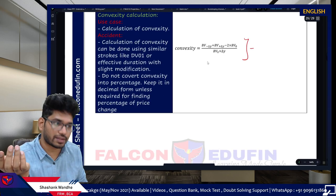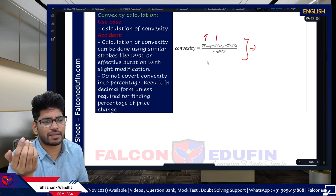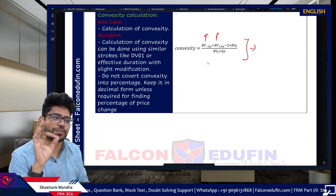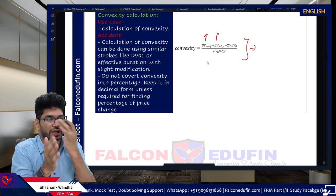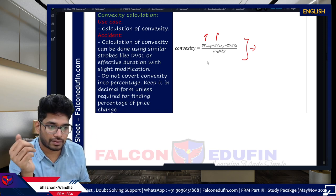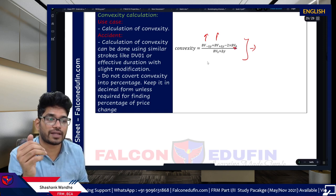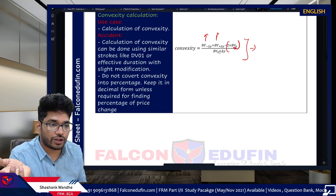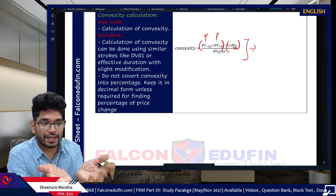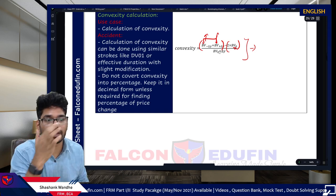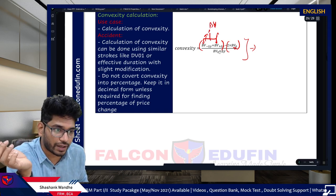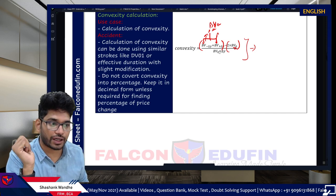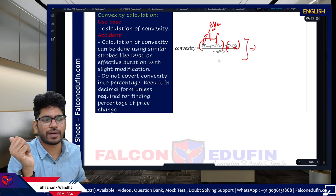Convexity is not highly testable, but if asked it is straightforward. Use the calculator if possible. GARP provides three bond prices: original, when yield increases, and when yield decreases. The convexity formula: (BV_minus + BV_plus - 2 × BV0) / (BV0 × delta_yield²). The numerator represents the difference that arises from adding the two bond prices — the result exceeds 2 × BV0 — and you compensate by subtracting 2 × BV0.